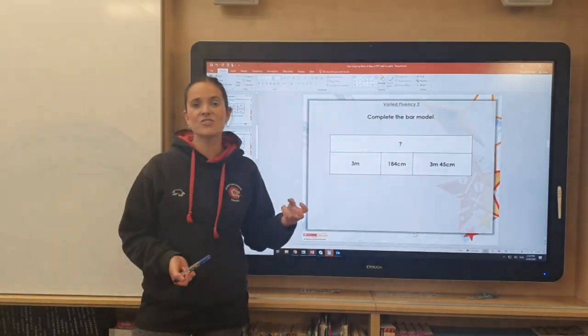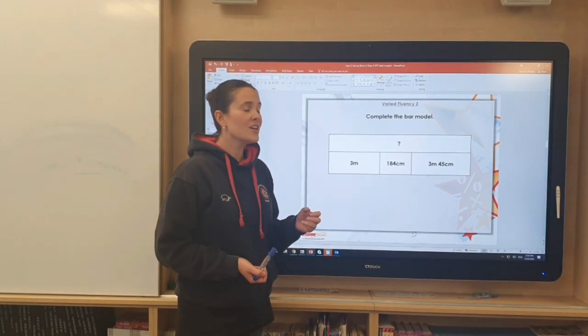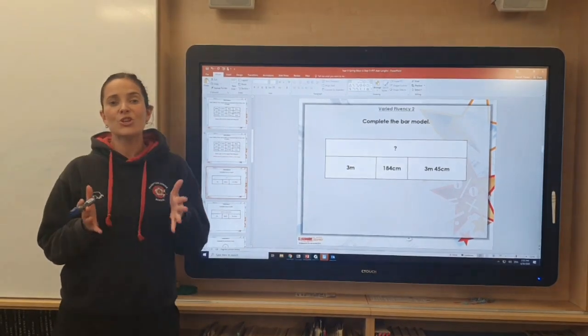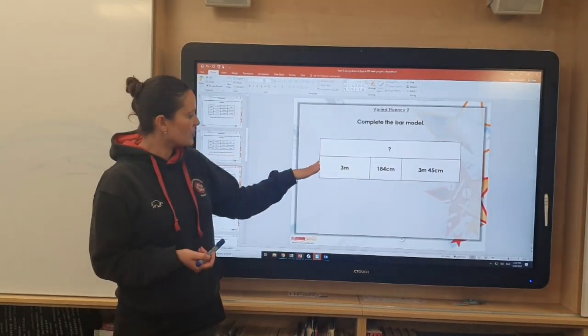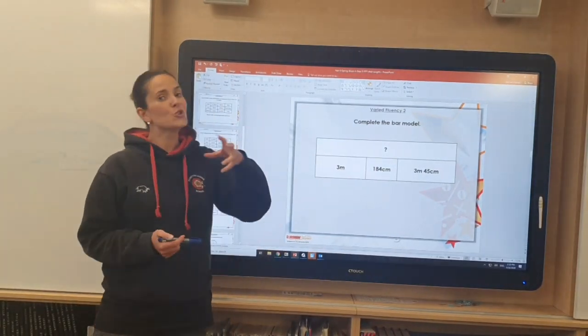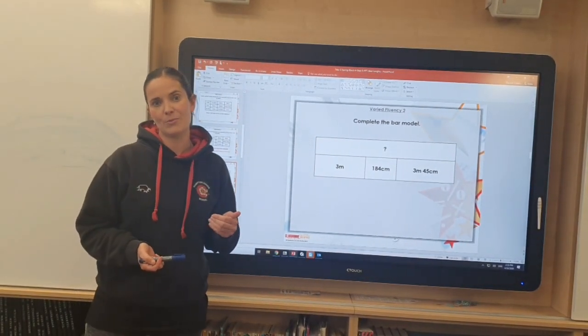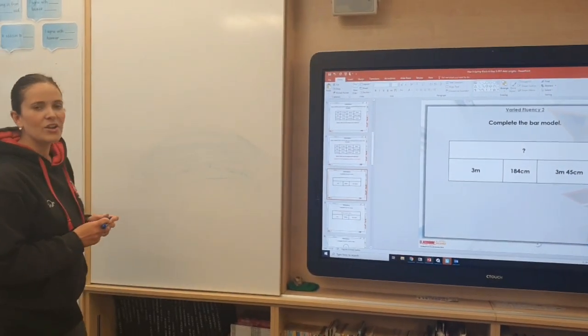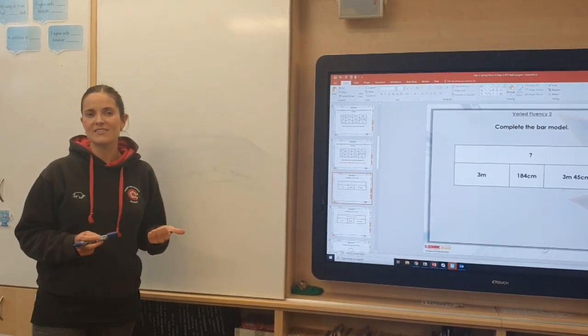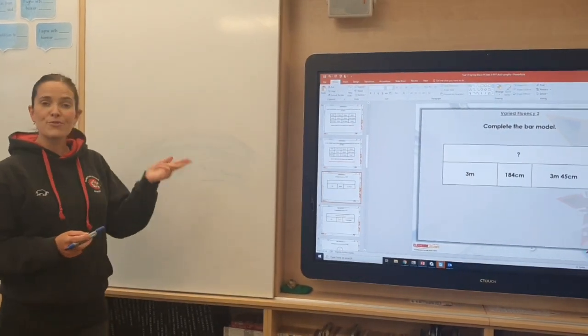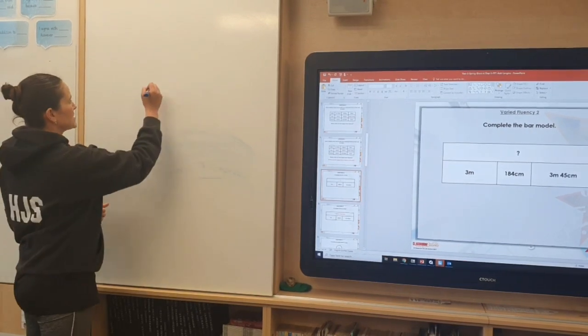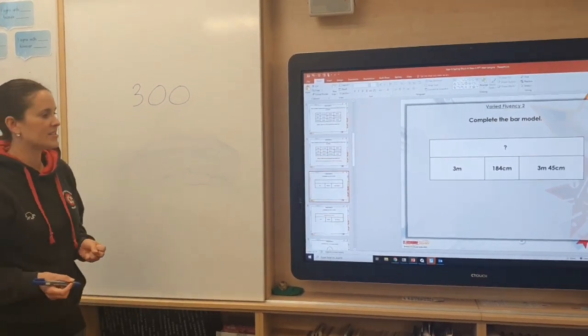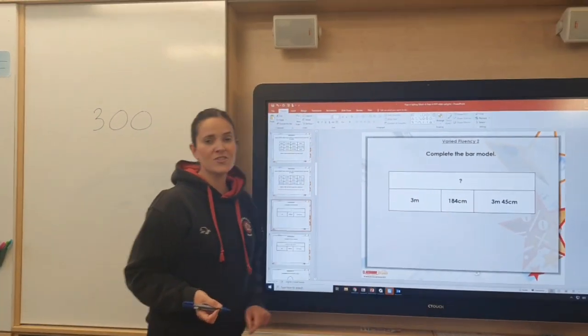And the best thing to do when you are tackling this kind of question is actually to make sure that all of your measurements are in the same unit of measure. So I'm going to be converting the metres into centimetres before I add them all up. So three metres in centimetres. Now I know that there are 100 centimetres in one metre. So if I have three metres there must be 300 centimetres in that three metres.